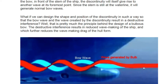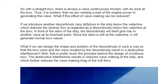By introducing a bulbous bow, we generate a second wave. As shown in the diagram, these two waves cancel each other: for each crest there is a trough and for each trough there is a crest. If we design the shape and position of the discontinuity such that the bow wave and the bulb wave result in destructive interference, we can reduce wave-making resistance. That is the principle behind the bulbous bow.